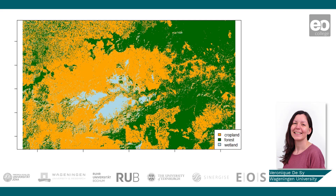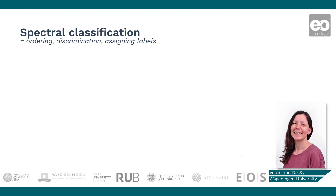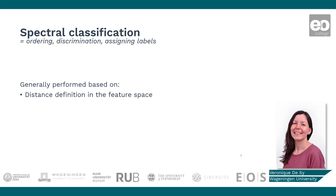For each unlabeled pixel, the distance in the feature space to the training classes is determined and the pixel is assigned to the closest training class. There are multiple ways of defining this closest distance depending on the chosen classification algorithm. Also, a threshold can be applied so that pixels with a relatively large distance to all training classes are not labeled, or get a label like unknown or unclassified.